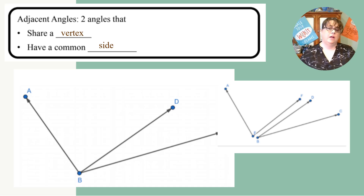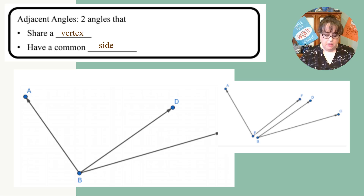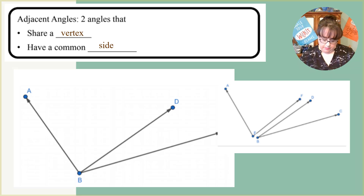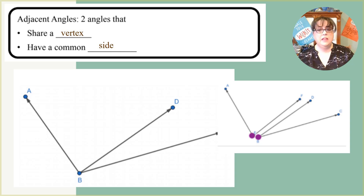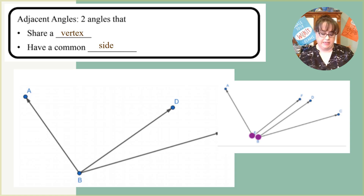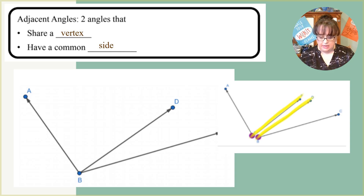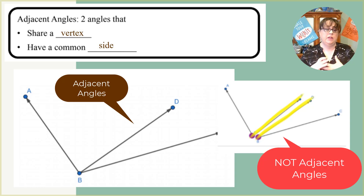Now let's look at an example that almost looks like adjacent angles but isn't quite. This is not an adjacent angle because they do not share a vertex — this one has vertex B and this one has vertex E. They look adjacent because they are close to each other, but they don't share the vertex. This one has ray EF and this one has ray BD, and because they are not actually touching one another, they are not adjacent angles.